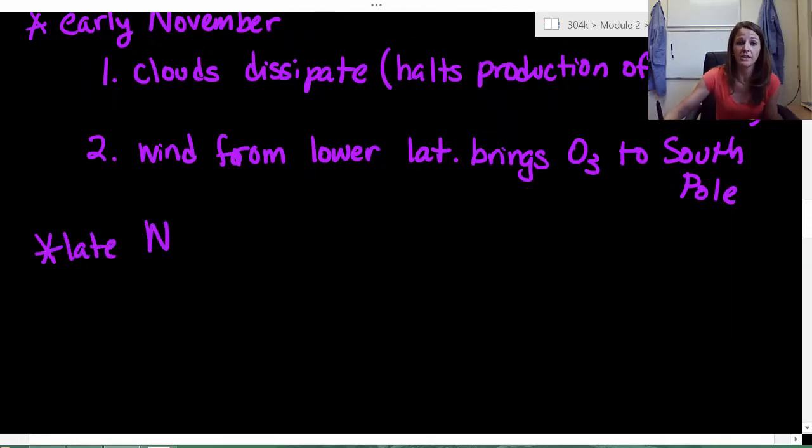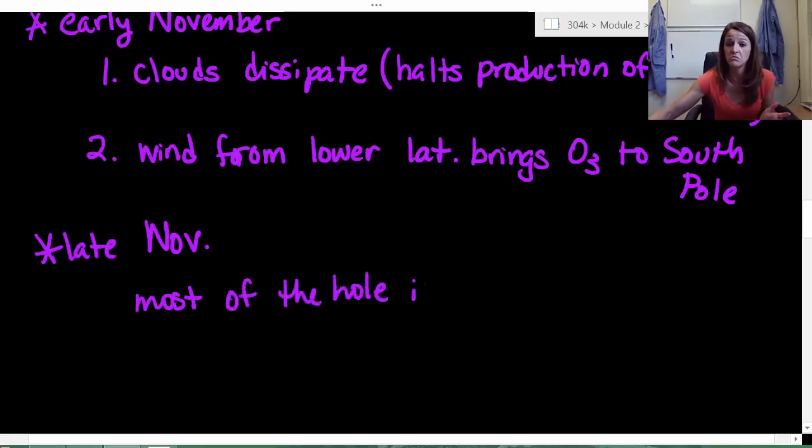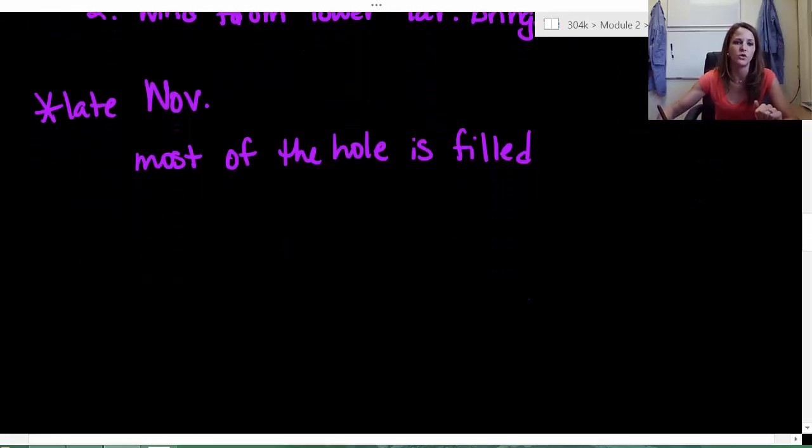So that's early November, which is awesome because by late November, most, I'm going to say most, of the hole is filled. So that's good. But can you imagine being a scientist and seeing these measurements for a good two months and being like, what is happening? I don't understand. So essentially, it has to do with these gorgeous clouds that really destroy our environment. All right. So now let me ask you a question. This is what the scientists were trying to figure out.